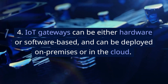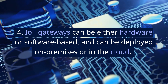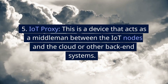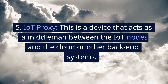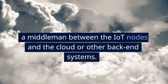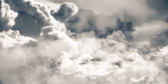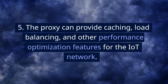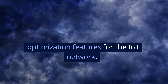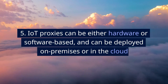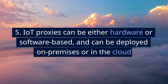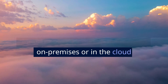IoT gateways can be either hardware or software-based, and can be deployed on-premises or in the cloud. IoT Proxy — this is a device that acts as a middleman between the IoT nodes and the cloud or other back-end systems. The proxy can provide caching, load balancing, and other performance optimization features for the IoT network. IoT proxies can be either hardware or software-based, and can be deployed on-premises or in the cloud.